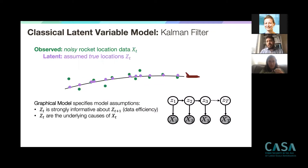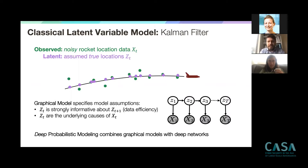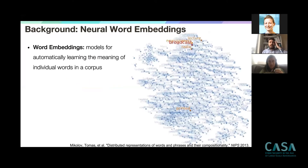Deep probabilistic modeling is actually only a tiny step from there — it combines probabilistic modeling with deep learning. The only addition is that neural network elements become building blocks in these probabilistic graphical models. I want to give an interesting example of combining deep probabilistic models with neural learning architectures from the domain of natural language processing.